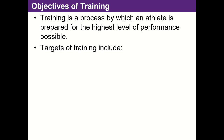One of my gripes about this book is they have a glossary but don't define a lot of really important terms, and some terms move around throughout, which drives me crazy. In attempting to define training: training is a process by which an athlete is prepared for the highest level of performance possible. The idea is that we're going to apply training stimuli — multiples — to make them a better athlete: improve their throwing accuracy, batting power, increase home runs, whatever we're trying to do.